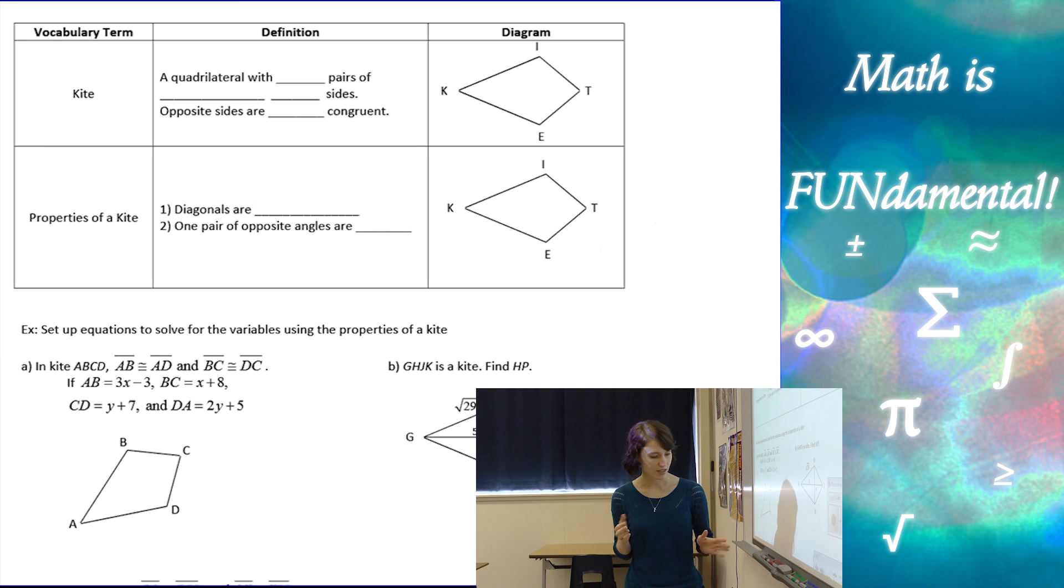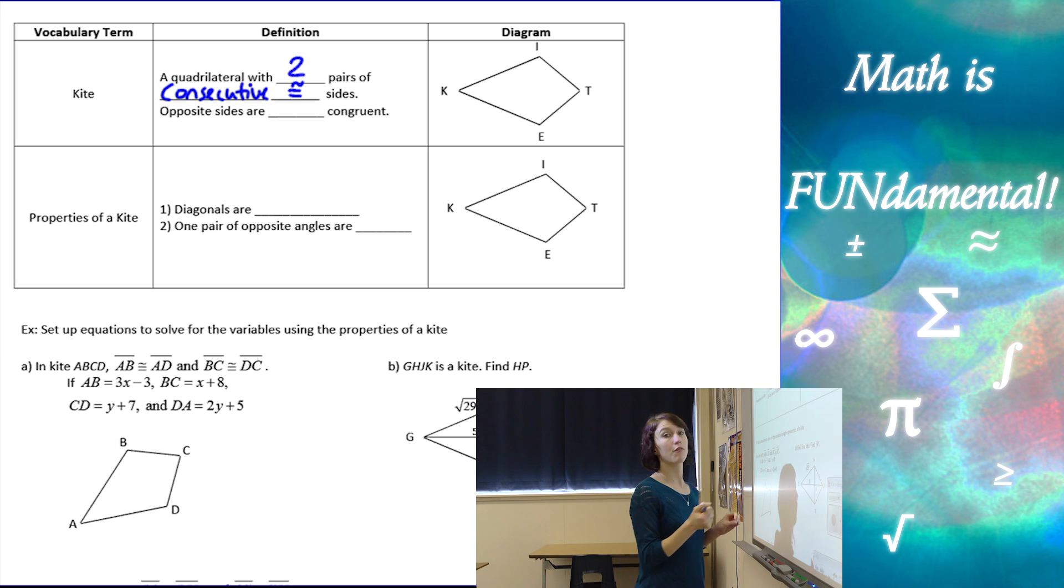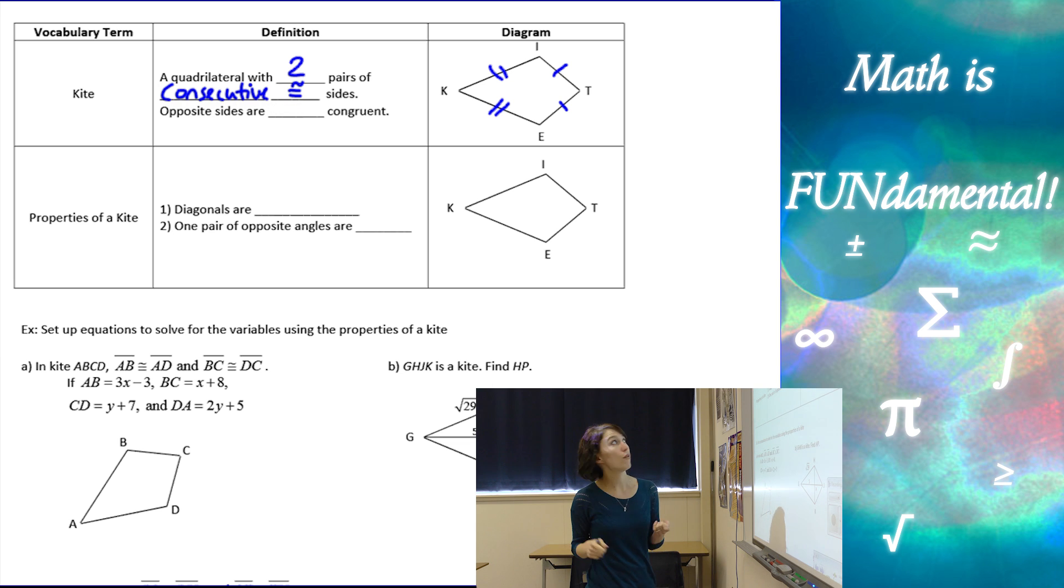Let's look at our next piece. So, a kite is a quadrilateral with two pairs of consecutive congruent sides. So, consecutive, remember, means kind of next in line, or next to, or in order. So, these two sides are going to be congruent, and these two sides are going to be congruent, and if you notice, opposite sides in a kite are not congruent in this case.